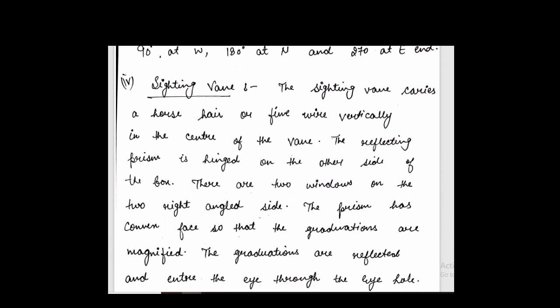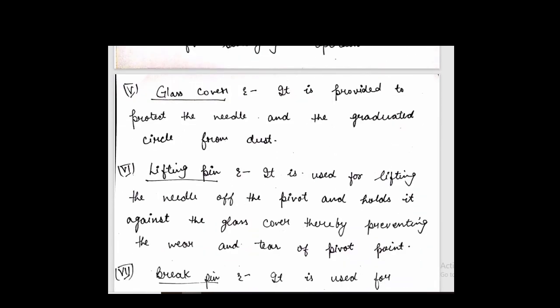Then sighting vein is a cross hair which we have to match with our point or the ranging rod we have placed on a traverse or a station, so we have to sight it with that.